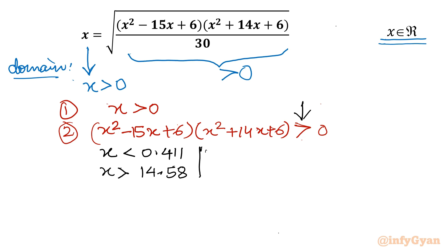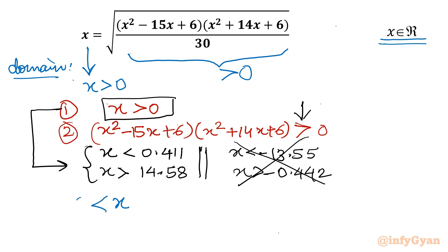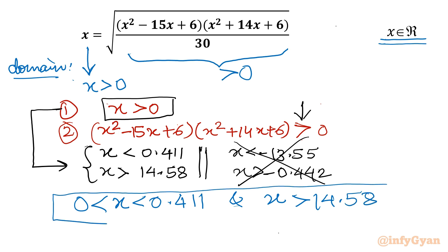Similarly, from the second bracket, the valid regions are x less than −13.55 and x greater than −0.442. Now applying the first condition x > 0, we can eliminate the negative regions. Taking the intersection, our domain becomes x greater than 0 and less than 0.411. Our answer must lie in this interval only.